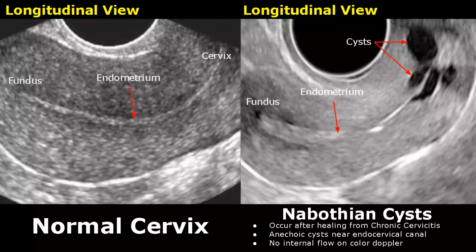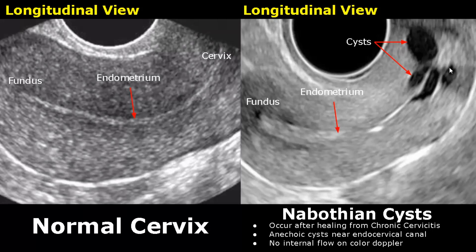Nabothian cysts are benign cysts and usually occur after the cervix heals from chronic cervicitis. We will see anechoic cysts near the endocervical canal. Some cysts may have internal echoes. On color Doppler, we will not see any internal flow.